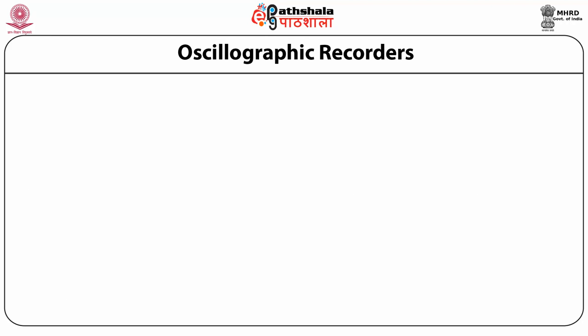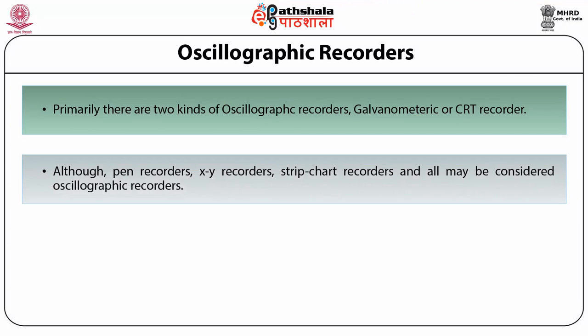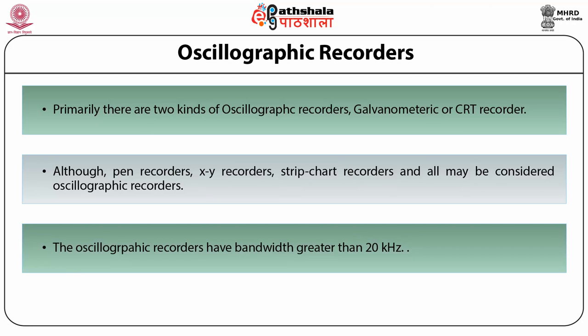Oscillographic recorders: There are primarily two kinds — galvanometric recorders and CRT recorders. Although pen recorders, XY recorders, and strip chart recorders may also be considered oscillographic recorders, the oscillographic recorders specifically have a bandwidth greater than 20 kHz.